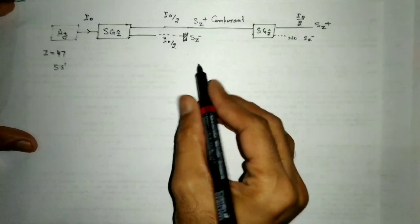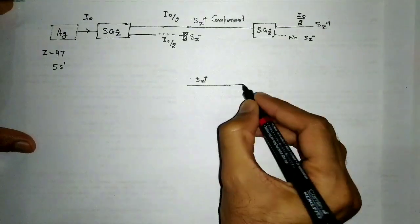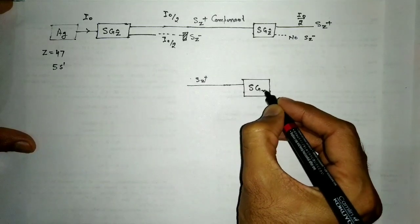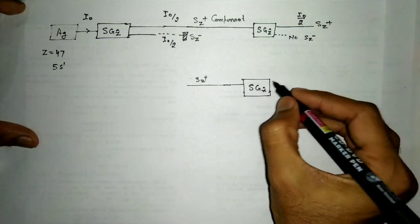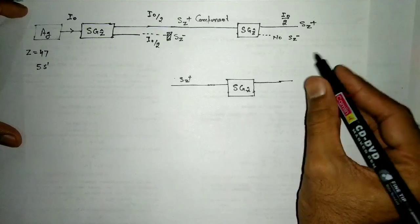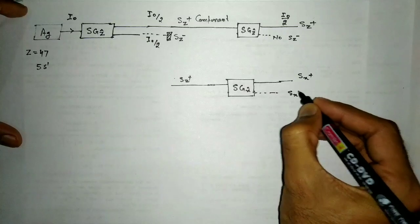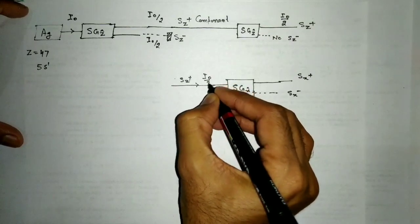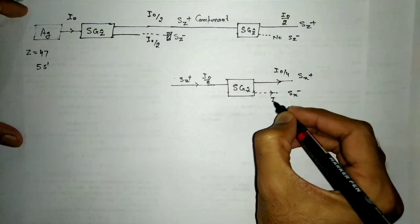If this Sz+ component is now passed through an SG arrangement where the magnetic field is along the X direction, then this Sz+ component is divided into two components: Sx+ and Sx−. The input intensity here is I₀/2, so the intensity of each resulting component is I₀/4.